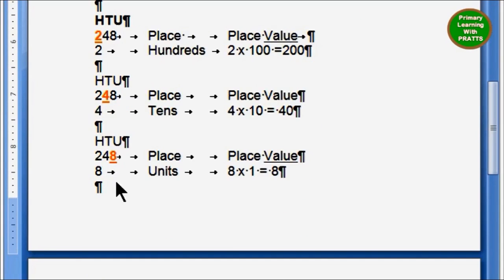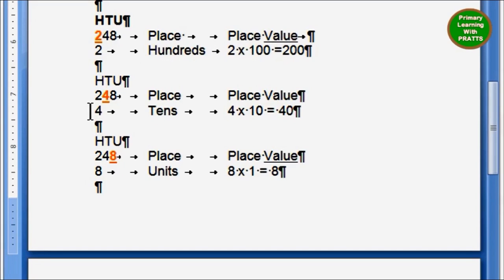We will see one more example: 248, arranged as H, T, U. In 248, the place and place value of the digit 2: 2 is in hundreds place, and the place value of 2 is 2 into 100, which is 200. For digit 4, the place is tens, and the place value is 4 into 10, which equals 40.